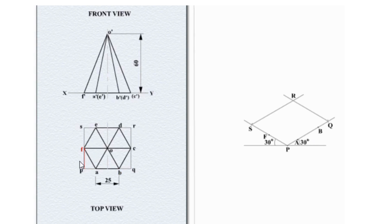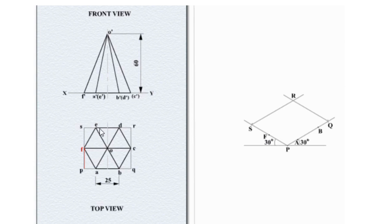Similarly, mark the distance from P to F on the line P-S, and mark the point capital F on the P-S line. Repeat the same process for the other corners C, D, E and remaining points.